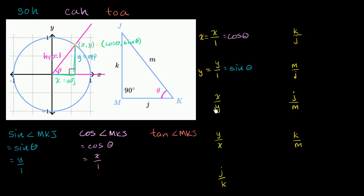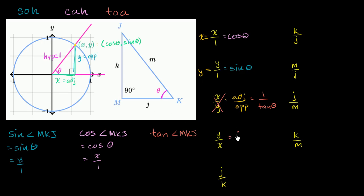Now we have x over y: that's adjacent over opposite. Tangent is opposite over adjacent, not adjacent over opposite, so this is the reciprocal of tangent — 1 over tangent of theta. That's not one of our choices, so we can rule this one out. But then we have y over x. Y is opposite and x is adjacent relative to angle theta, so this is tangent of theta. Tangent of angle mkj equals tangent of theta, which equals y over x.